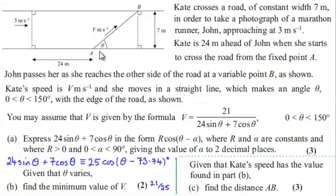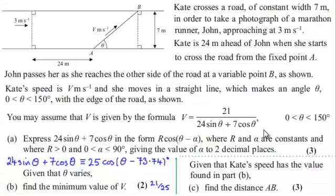Theta is between naught and 150 degrees. In the previous part, part B, we worked with a formula where we assumed V was given by that expression, and we used part A to find the minimum value of V, which we found to be 21 over 25. We're now told that given Kate's speed has that value found in part B — that is, 21 over 25 — we need to find the distance AB for three marks.